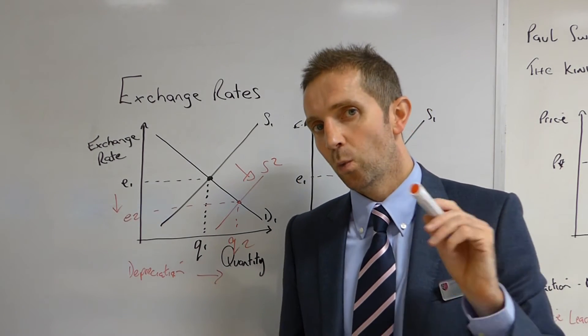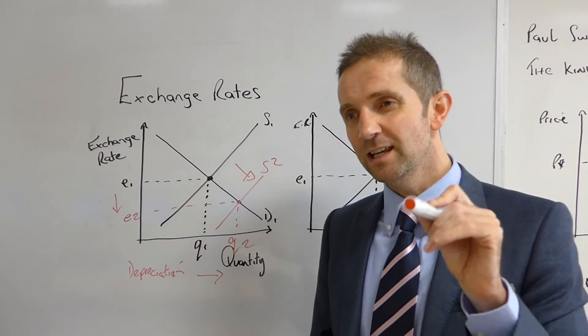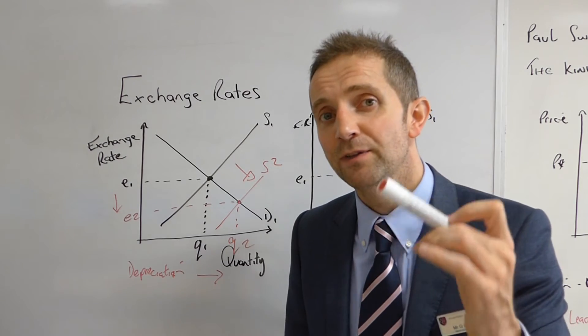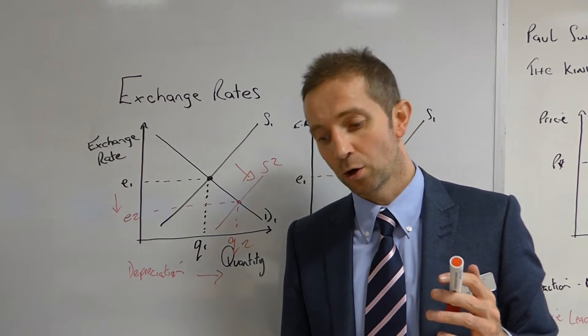However, whilst they stepped in and lent money to the likes of Portugal, Ireland, Italy, Greece and Spain, the lending of the money came with very very strict conditions about the economic practices that could go on in these economies.